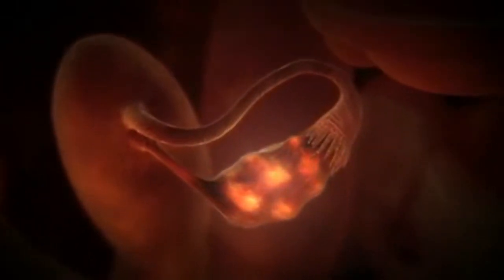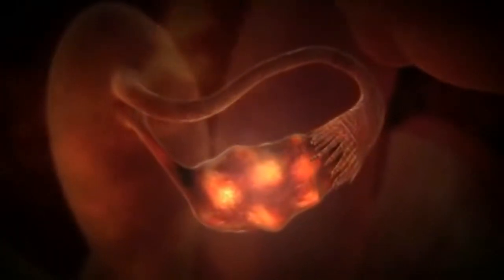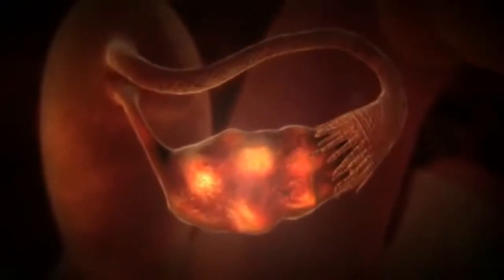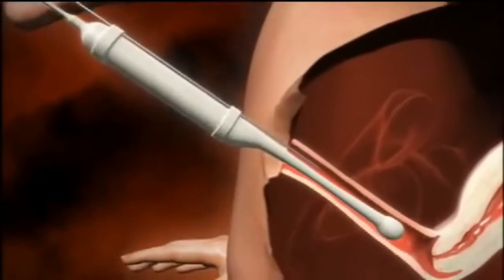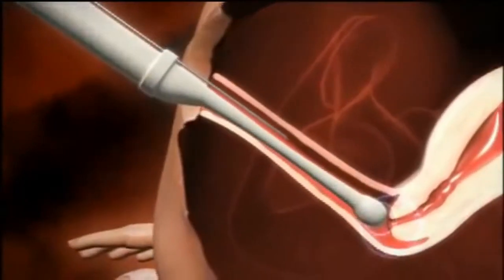Women having IVF are given special reproductive hormones to encourage several eggs to develop in the ovaries. Final maturation of the egg itself is induced by the administration of a further hormone.